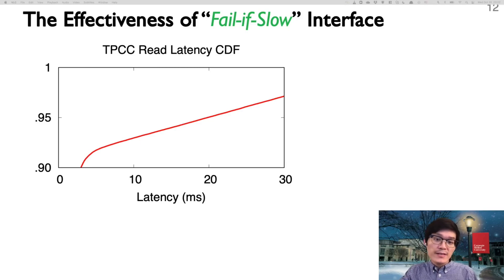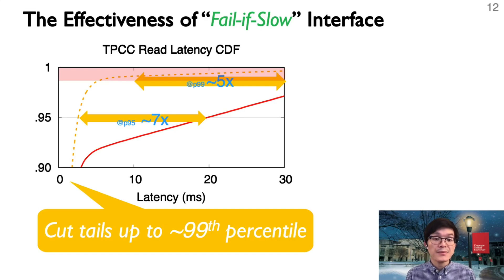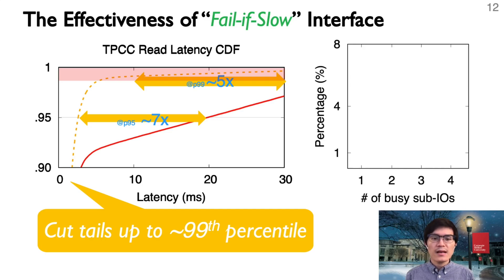Let's see how well the fast-fail interface works under a TPCC workload. Here we show the read latency CDF. The X is the latency in milliseconds and Y is the percentile. The red line represents the base case. We can see it improves tail latency a lot. For instance, we get roughly seven times better latency at 95th percentile and five times at 99th percentile. Overall, the fast-fail interface can help cut tail latency up to the 99th percentile. You may wonder why 99. Well, let's measure one level deeper.